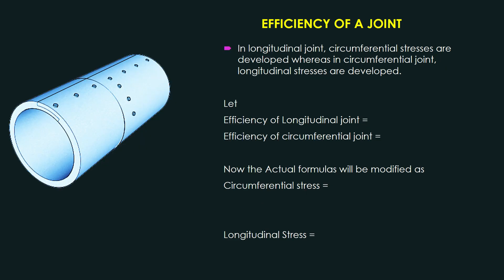You can see the joints here — one is provided along the length, called the longitudinal joint, and the other is the circumferential joint. For the longitudinal joint, the plate is made into a circular shape and connected with rivets. If this joint is not very efficient it will open up — affecting the circumference. Technically, the longitudinal joint will affect the circumferential stress.